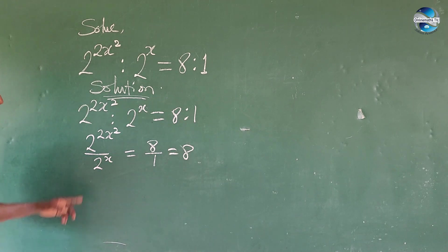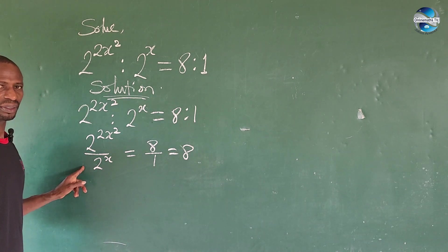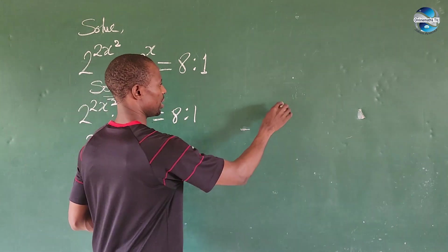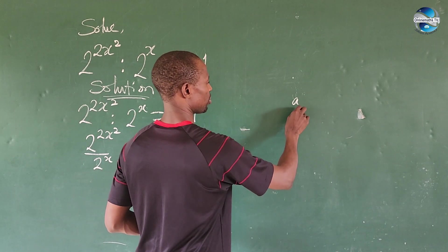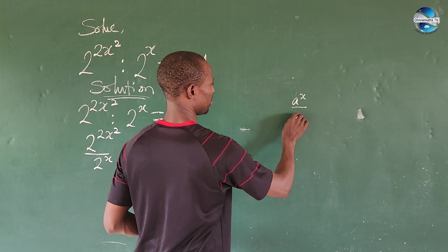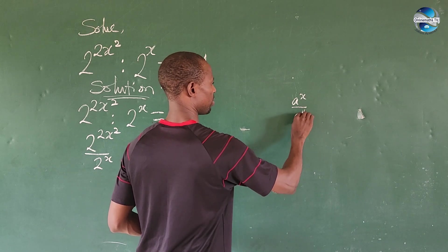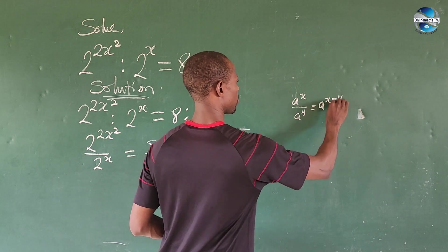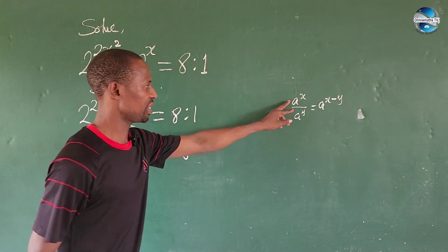We use the law of division of indices. If you have a^x over a^y, this equals a^(x-y). Why? Because the bases are the same and we have a divisional sign.